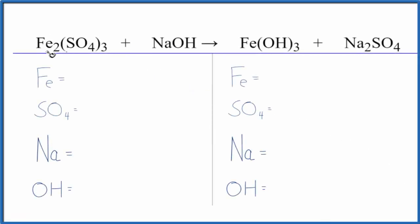In this video, we'll balance the equation Fe2(SO4)3 plus NaOH. This is iron 3 sulfate plus sodium hydroxide. It's a pretty intimidating looking equation to balance, but we're going to use a trick that'll make it a lot easier.